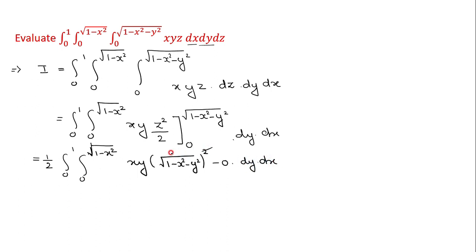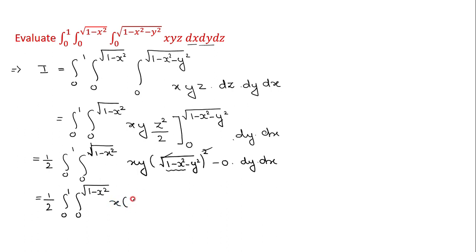The square and square root cancel. For the next integration, x is constant. Grouping terms: (1 minus x²) and minus y² separately, we get (1/2) ∫(0 to 1) ∫(0 to √(1 minus x²)) [x(1 minus x²)y minus xy³] dy dx.